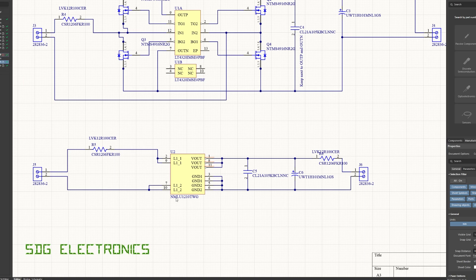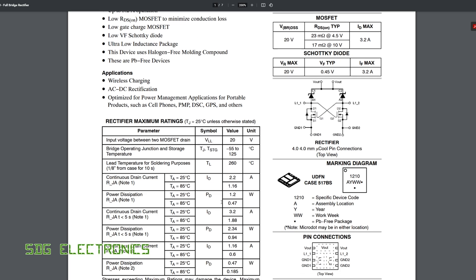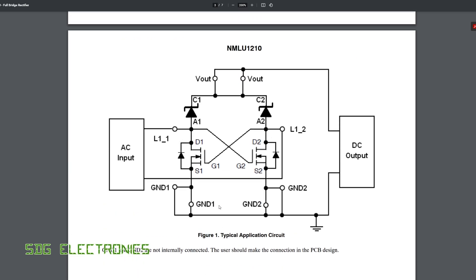Finally we have a sort of hybrid approach using this dedicated chip here. So this is the On Semiconductor NMLU1210 full bridge rectifier, and this is kind of a hybrid of the two. So basically what we've got is a pair of Schottky diodes at the top, but what's happening is we've got a couple of MOSFETs switching the low side. So when we've got this side positive going, obviously we've got current going through this diode through to the output.